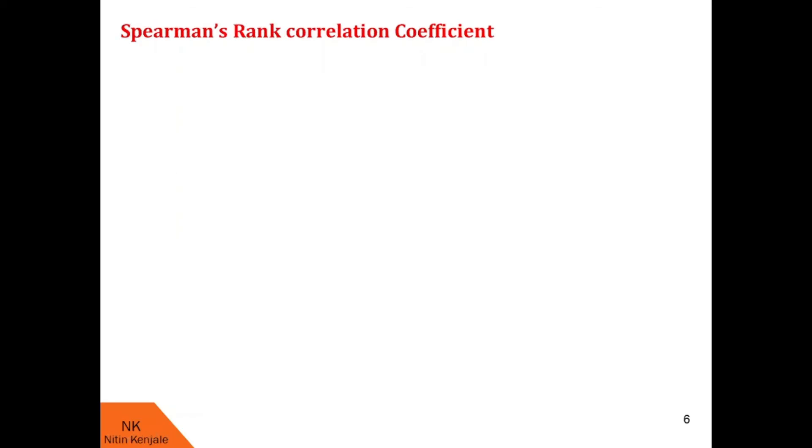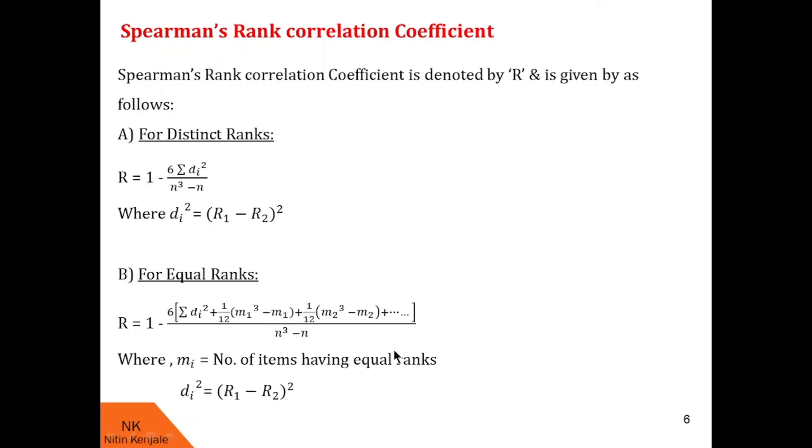Next we see Spearman's rank correlation coefficient. Spearman's rank correlation coefficient is usually denoted by capital letter R and is given as follows. When data values has distinct ranks, the Spearman's correlation coefficient is given by 1 minus 6 into summation Di square upon N cube minus N, where N is the number of data values and Di square is given by R1 minus R2 whole square, where R1 minus R2 represents difference between ranks of the corresponding data variables.